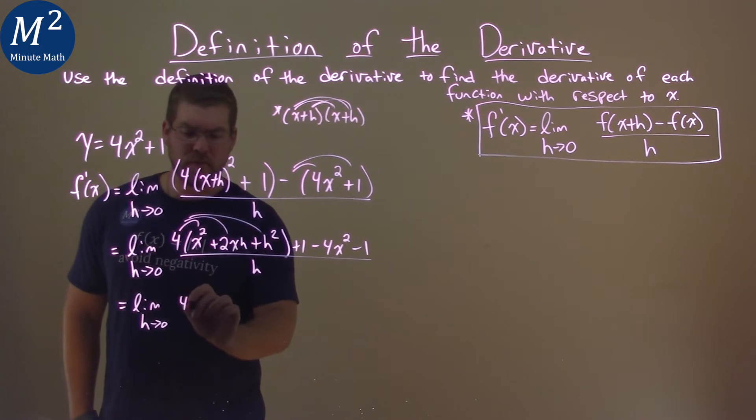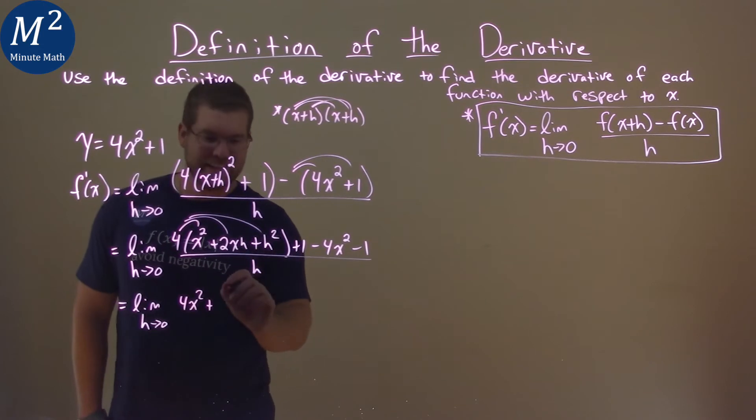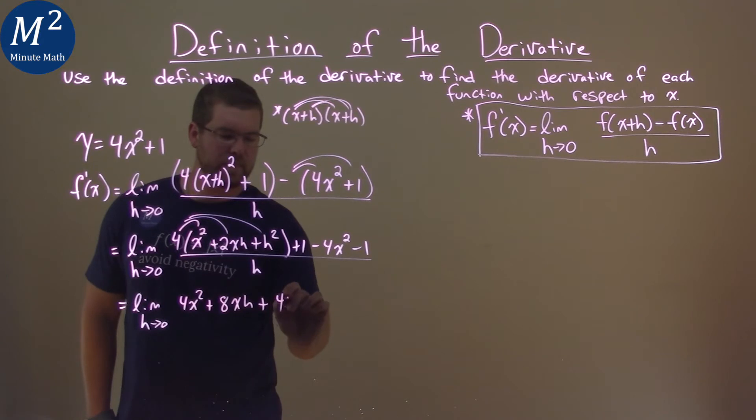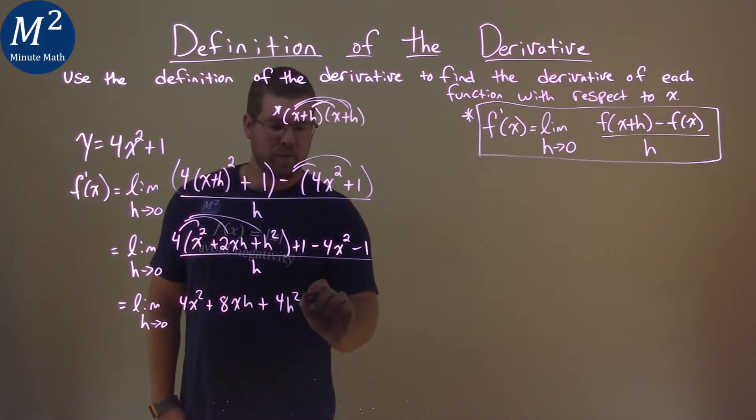4 times x squared is 4x squared. 4 times 2xh is 8xh, and then we have 4h squared. We still have the plus 1.